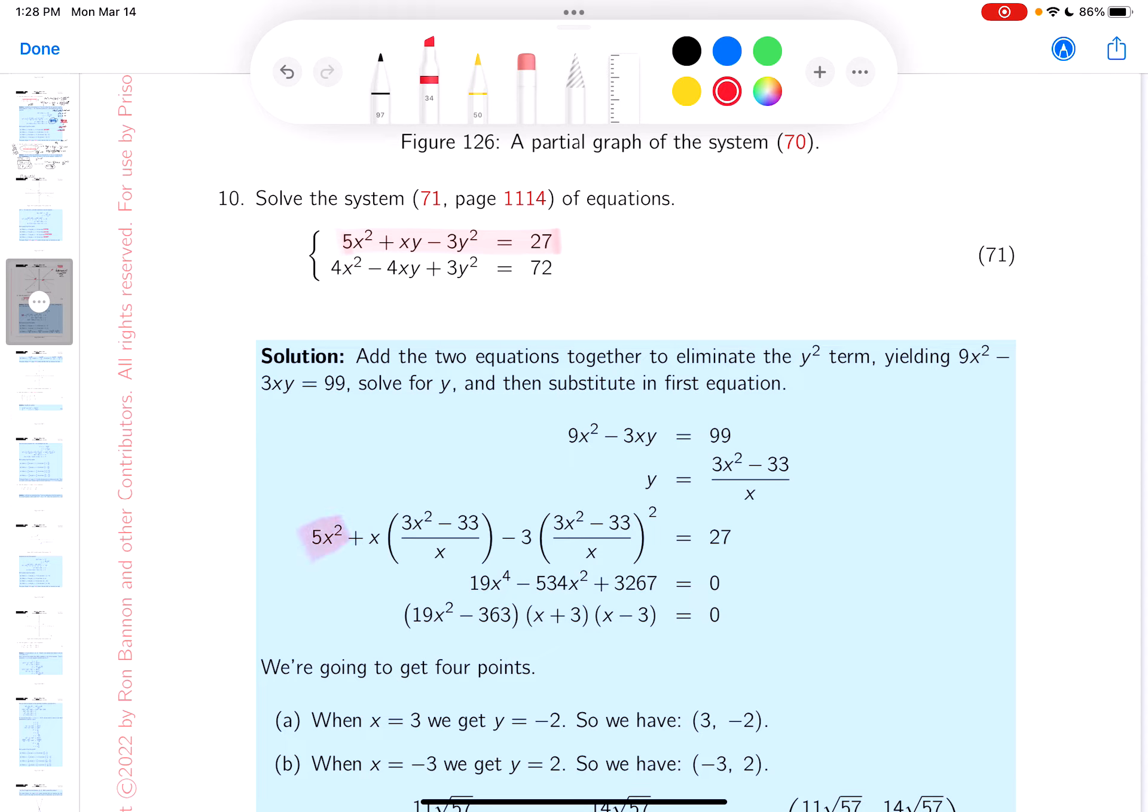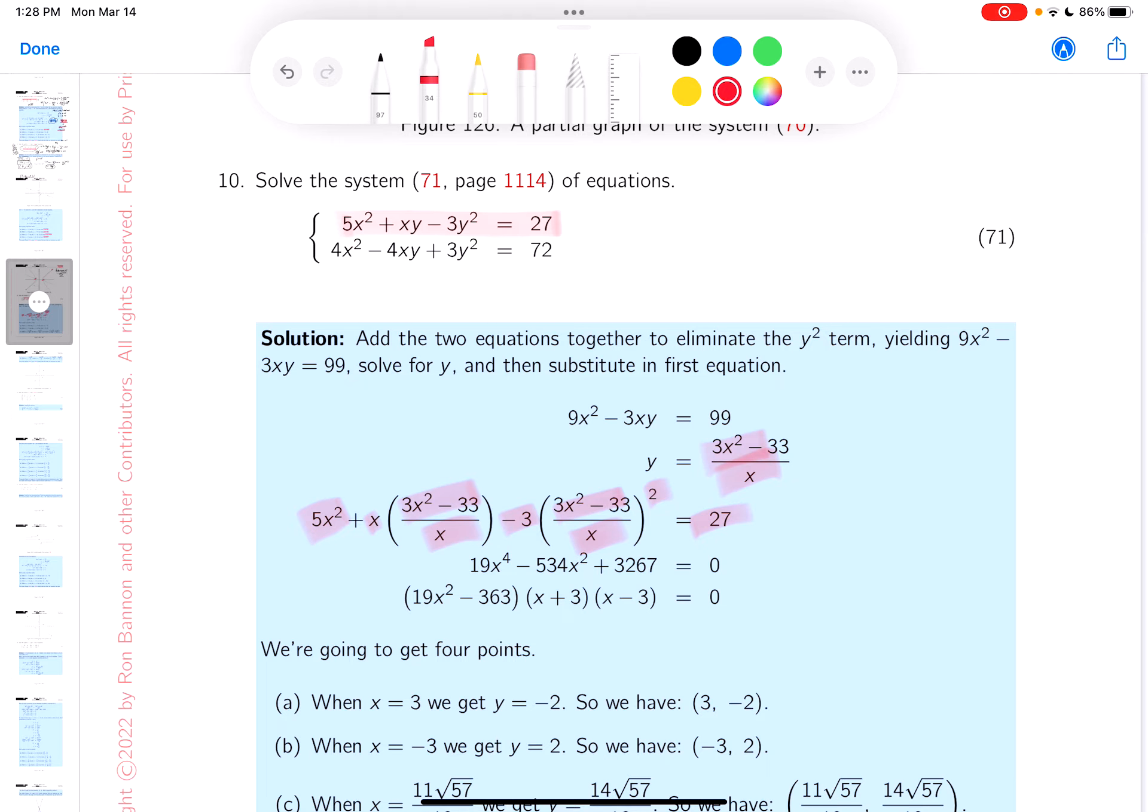So I put 5x² times y. Well, this is what y is minus 3. This is what y is equals 27 and I got to be honest with you, this is work. This is going to require work.